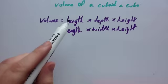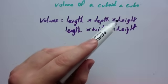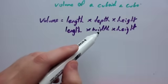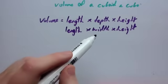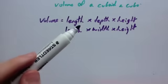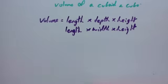To get the volume of a cuboid, you do length times depth times height. Sometimes people use the word width instead of depth, so they may say length times width times height. To find the volume of a cuboid, you multiply the three dimensions by each other.